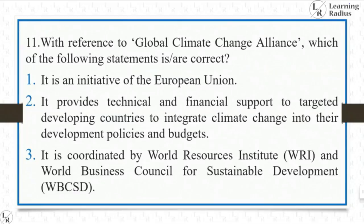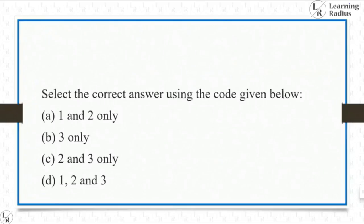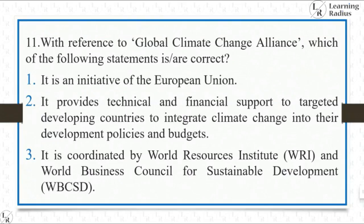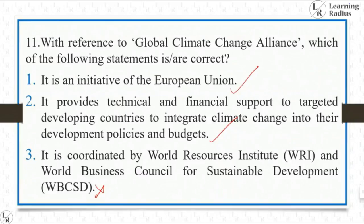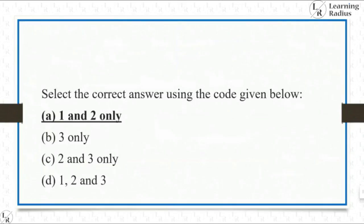With reference to the Global Climate Change Alliance, which of the following statements is correct? Statement 1: It's an initiative of the European Union — absolutely right. Statement 2: It provides technical and financial support to targeted developing countries to integrate climate change into their development policies and budgets — also right. Statement 3: It is coordinated by the World Resources Institute (WRI) and World Business Council for Sustainable Development — that is wrong, there is no connection to WRI and WBCSD. The first and second statements are right, so the answer is A, one and two.